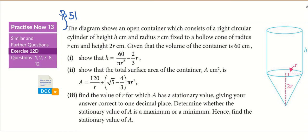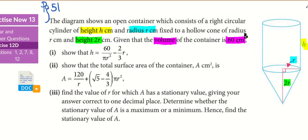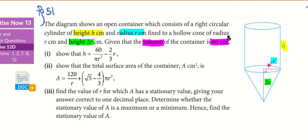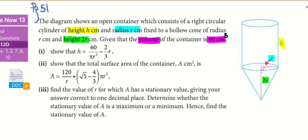Okay, let's underline the important information. The height is h centimeters, the radius is r cm. There is the height of the cone as well—radius is also r, but the height is 2r. These are all the information given, but more importantly, the most important information: the volume of the whole thing is 60 cubic centimeters. I think there's a missing cube—must write to the publisher.